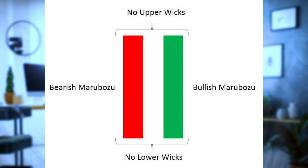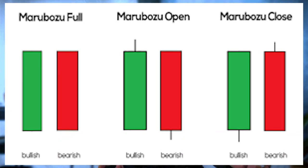The marubozu candle has no upper or lower wicks — the low was the same as the open and the close was the same as the top. These are very bullish and a strong sign that buyers are in control of the market and that further upside can be expected. Marubozu candles can have either no wicks at all or one wick, and are considered a very strong signal that price will continue in the same direction. Bullish marubozu candles show that buying interest was so strong there was no price pullback. Bearish marubozu candles show that selling pressure was strong with no strength to fight against the downward price action.